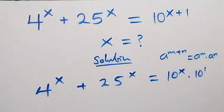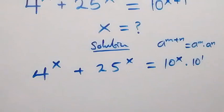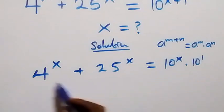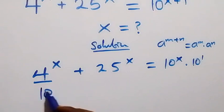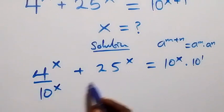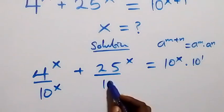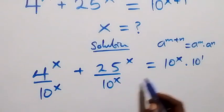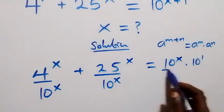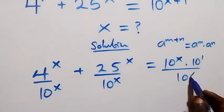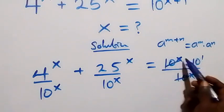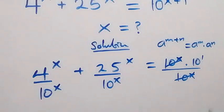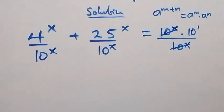In the next step, let's divide through by 10 raised to power x. We divide the left side by 10 raised to power x, and also the right side by 10 raised to power x. These cancel each other, leaving 10 raised to power 1, which is still 10.